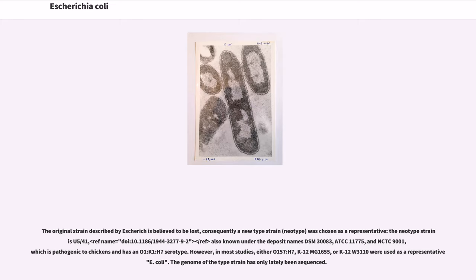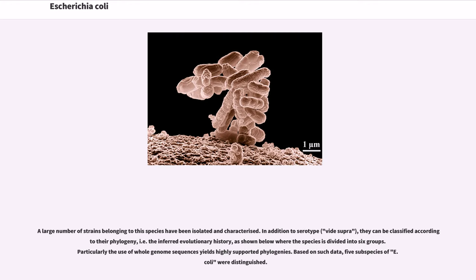However, in most studies, either O157:H7, K12 MG1655, or K12 W3110 were used as a representative E. coli. The genome of the type strain has only lately been sequenced. A large number of strains belonging to this species have been isolated and characterized. In addition to serotype, they can be classified according to their phylogeny, i.e., the inferred evolutionary history, where the species is divided into six groups. Particularly the use of whole genome sequences yields highly supported phylogenies. Based on such data, five subspecies of E. coli were distinguished.